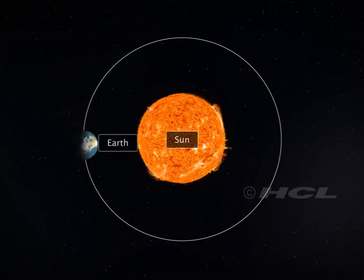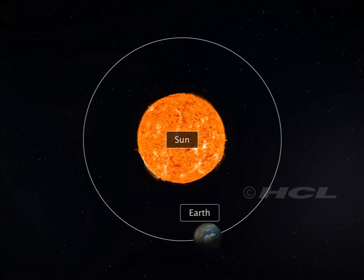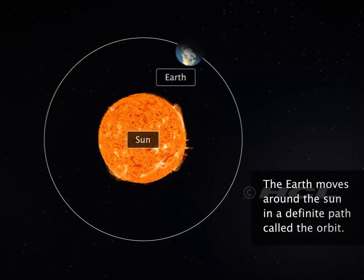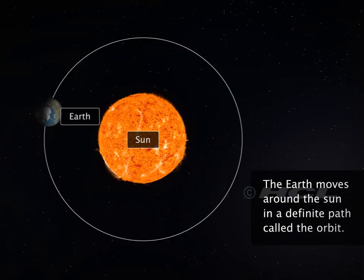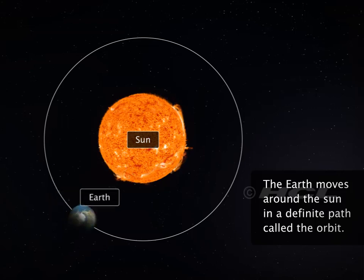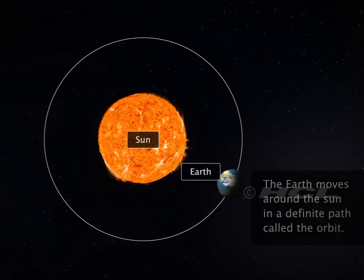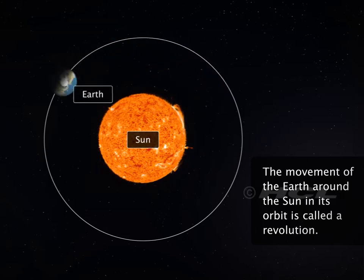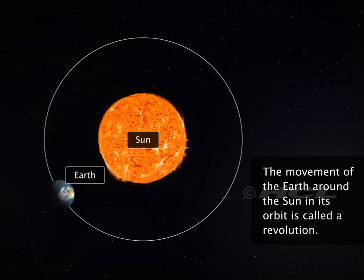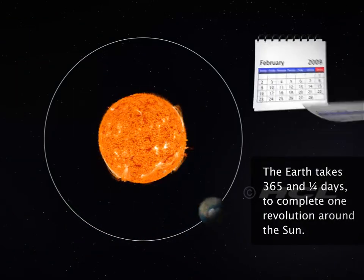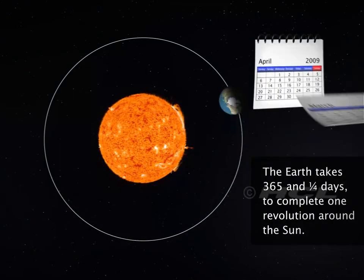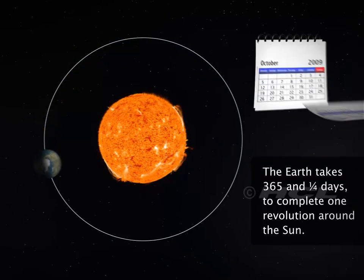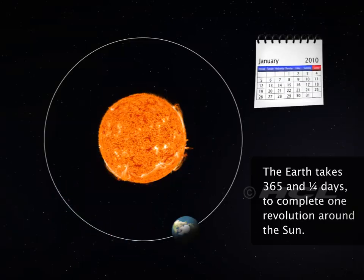The earth, similarly, does not remain in the same place as it rotates. It moves around the sun in a definite path. This path is called the earth's orbit. This movement of the earth around the sun in an orbit is called a revolution. It takes 12 months or 365 and a quarter days to complete one revolution around the sun.